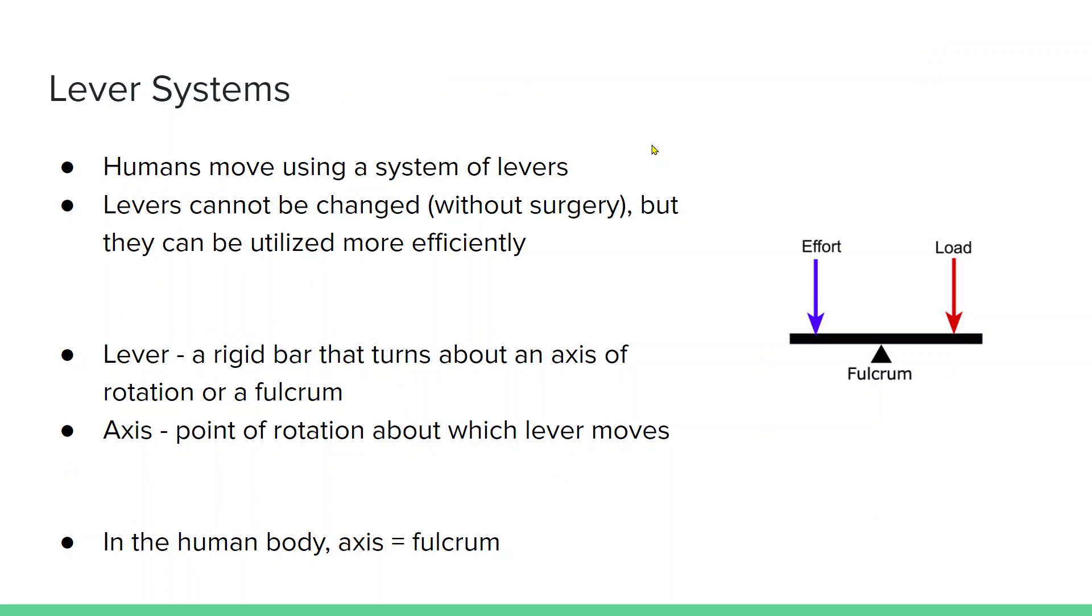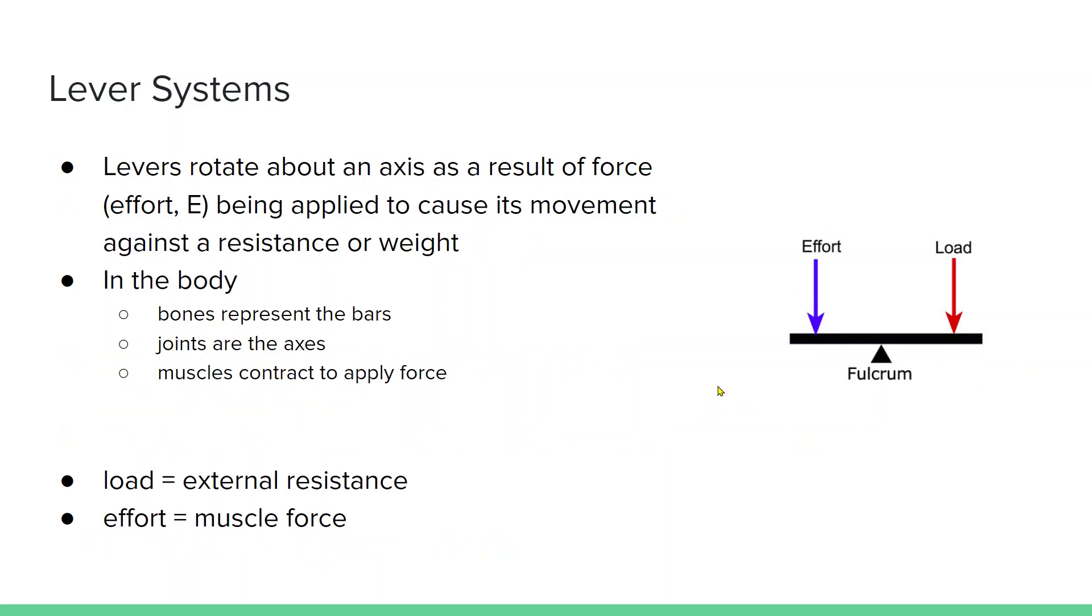Lever systems. Humans move using a system of levers. They cannot be changed without surgery, although being active will increase some of the anatomical pulleys in your body just by bone adaptation. The lever is a rigid bar that turns about an axis of rotation or a fulcrum, and the axis is the point of rotation about which the lever moves. So in the human body, the axis equals the fulcrum. Here we see the effort and the load. The fulcrum would be the joint center, the effort is our muscle, and the load is what we're lifting. Levers rotate about an axis as a result of force or effort being applied to cause movement against the resistance or the load. Bones represent the bar, the joints are the axes, and the muscle contraction is the effort.